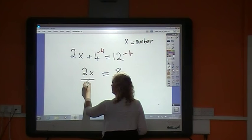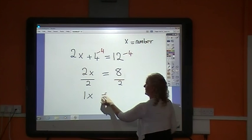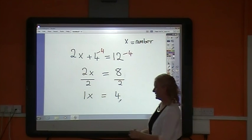So if I divide this side by 2, I must divide this side by 2. So 2 divided by 2 is 1x equals 8 divided by 2 is 4. And we know that 1x is the very same as x equals 4.